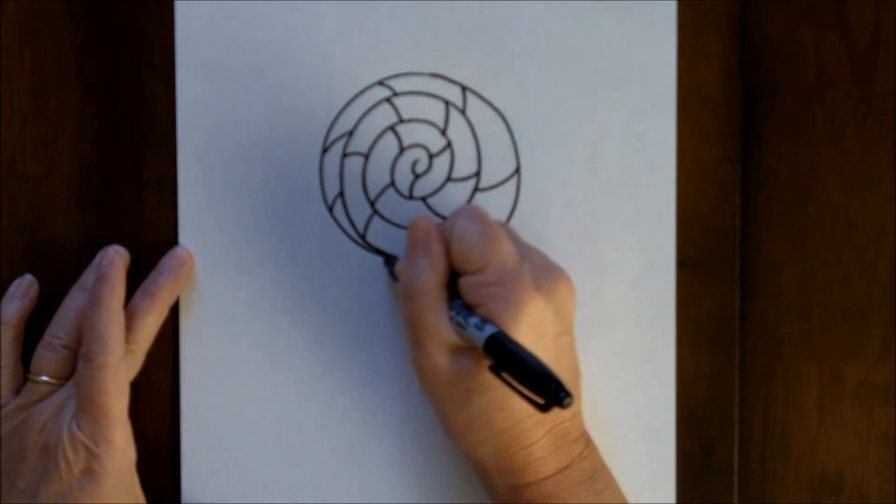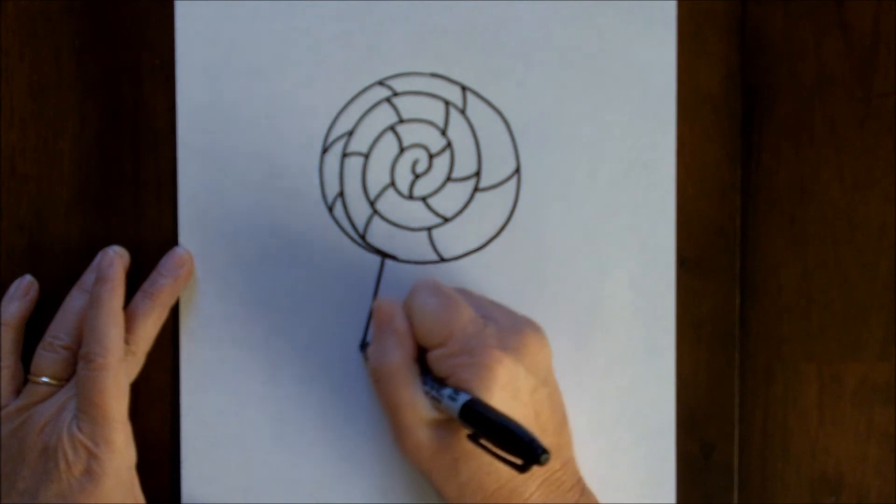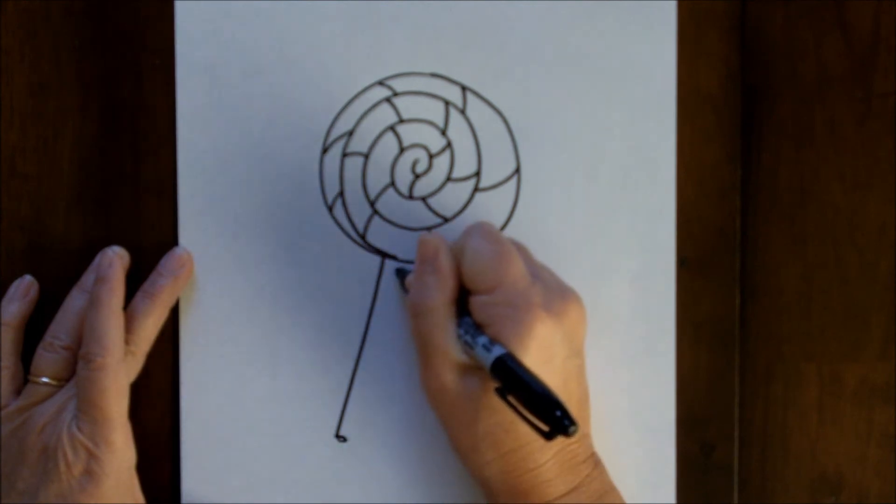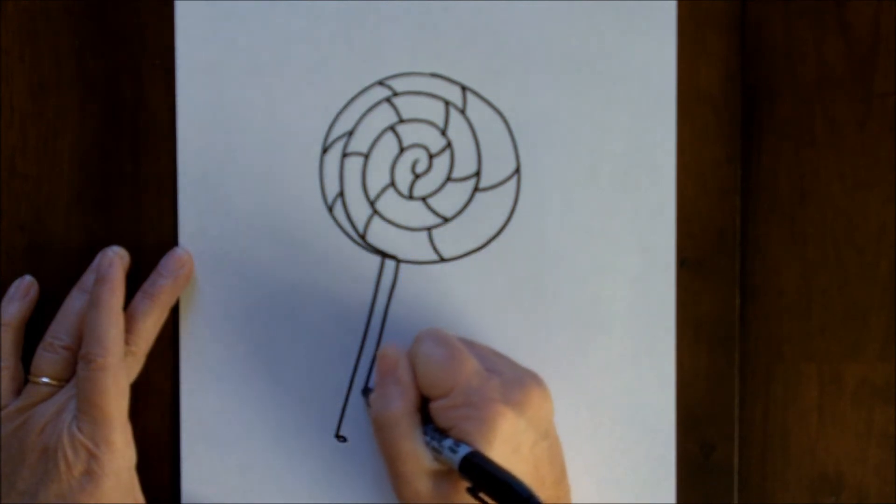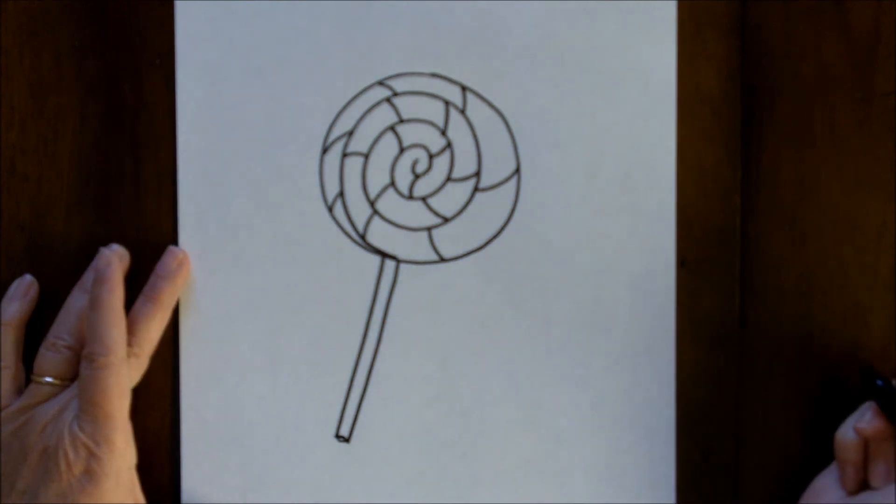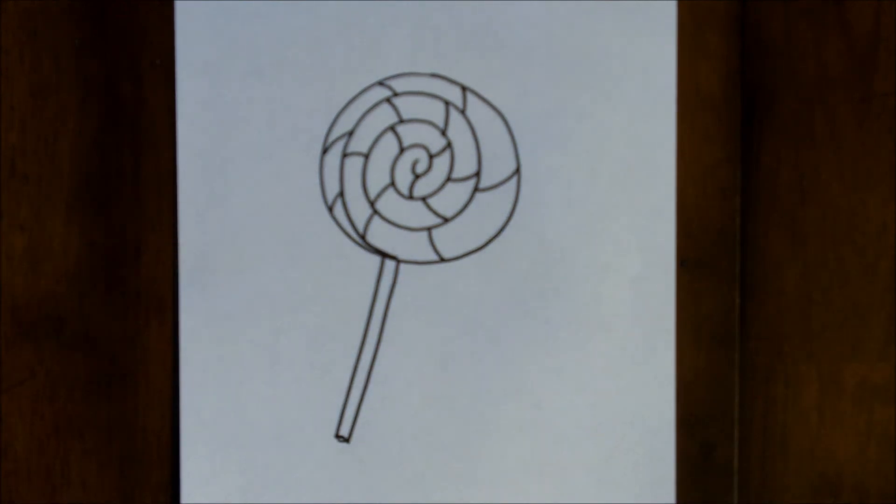All right, then from the bottom, I'm going to make a stick coming out with two straight lines and a little circle at the bottom. There you go. There's your lollipop. Thank you for watching.